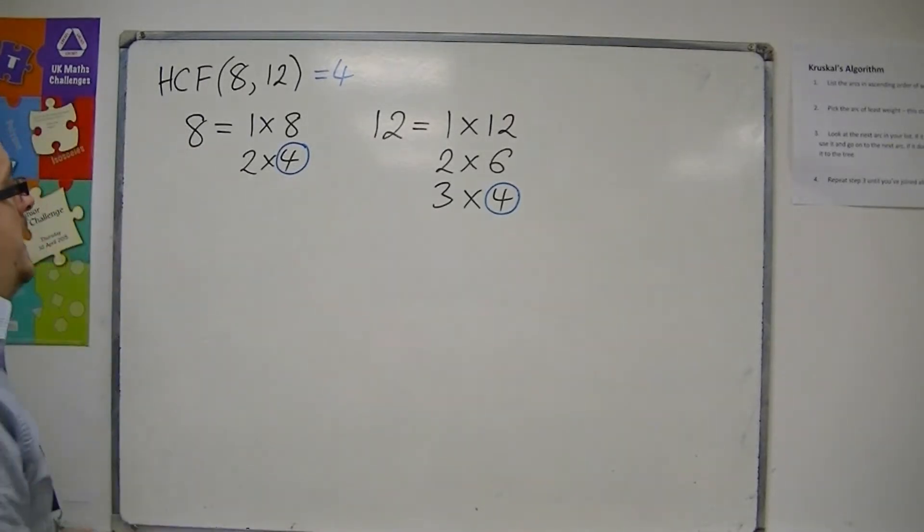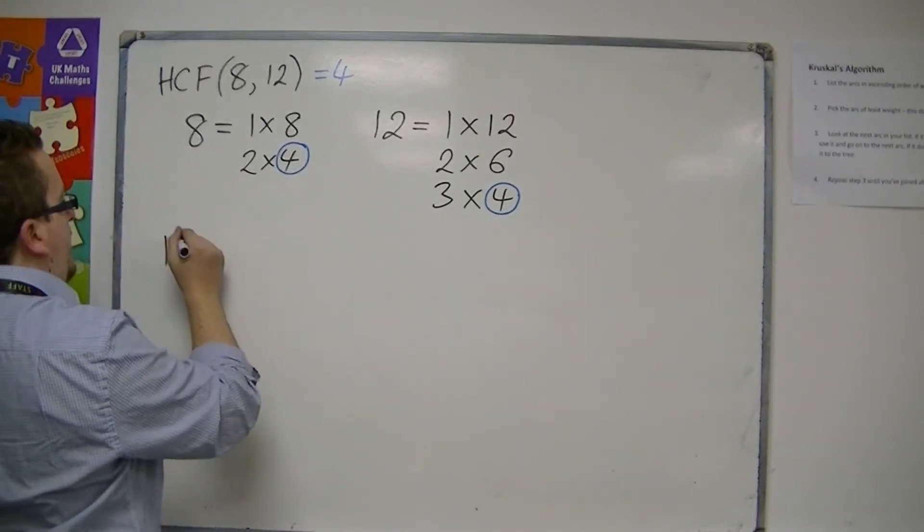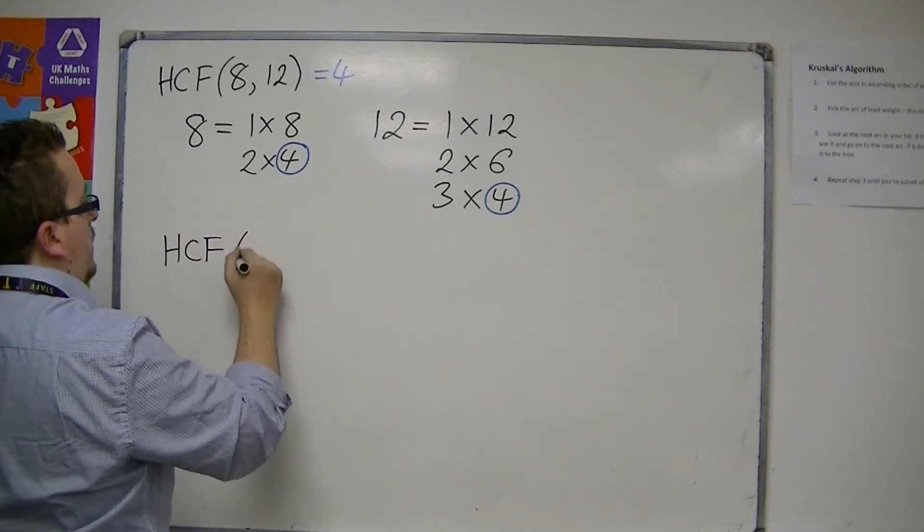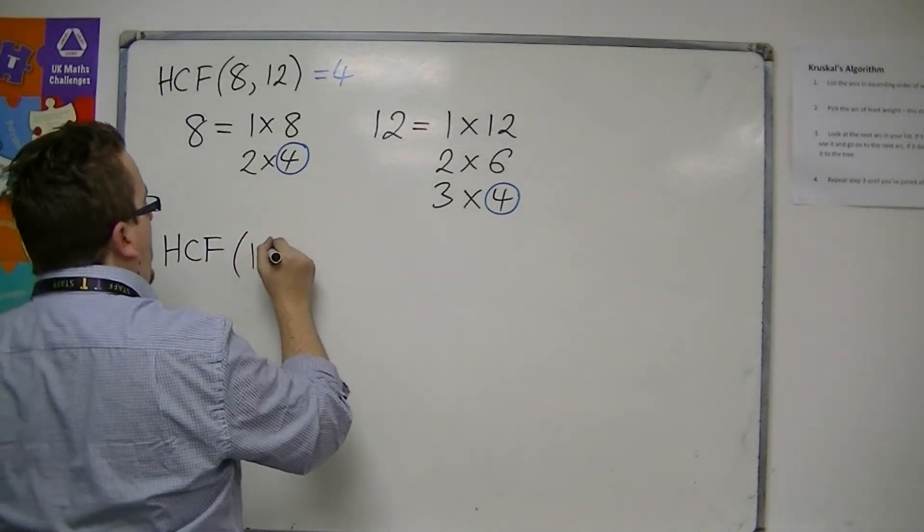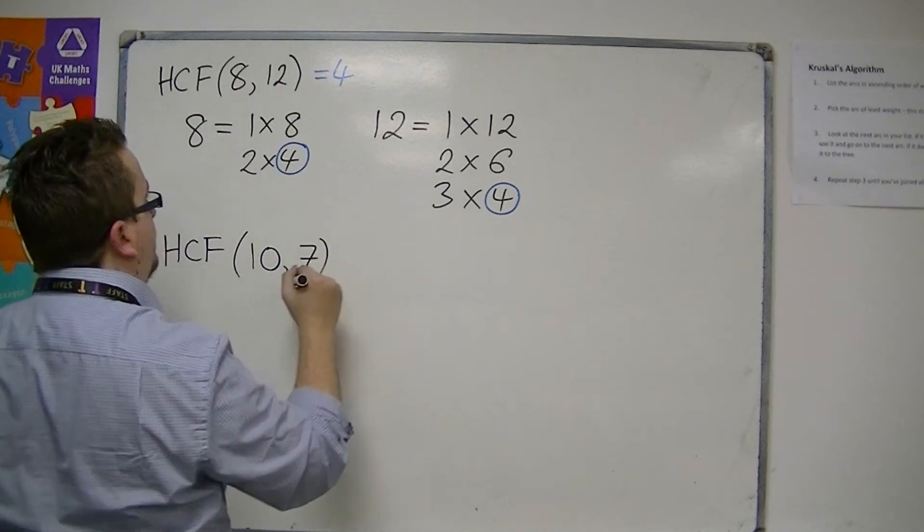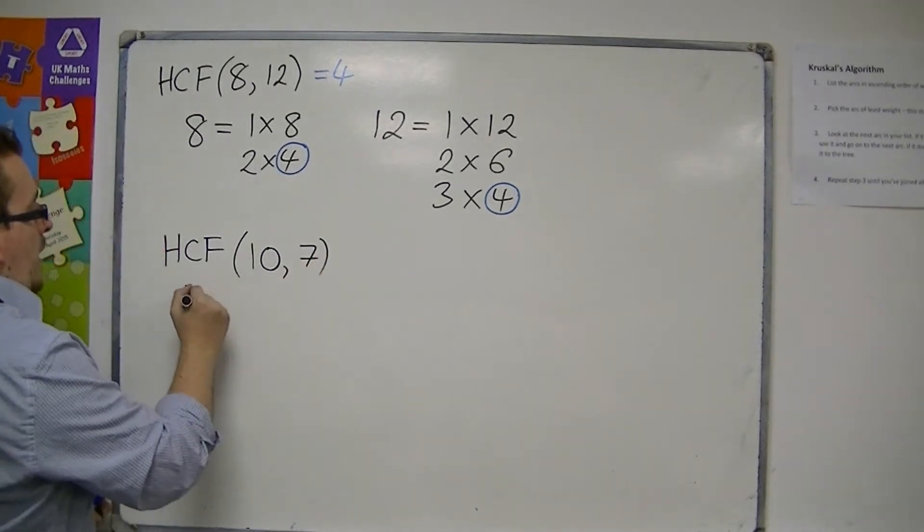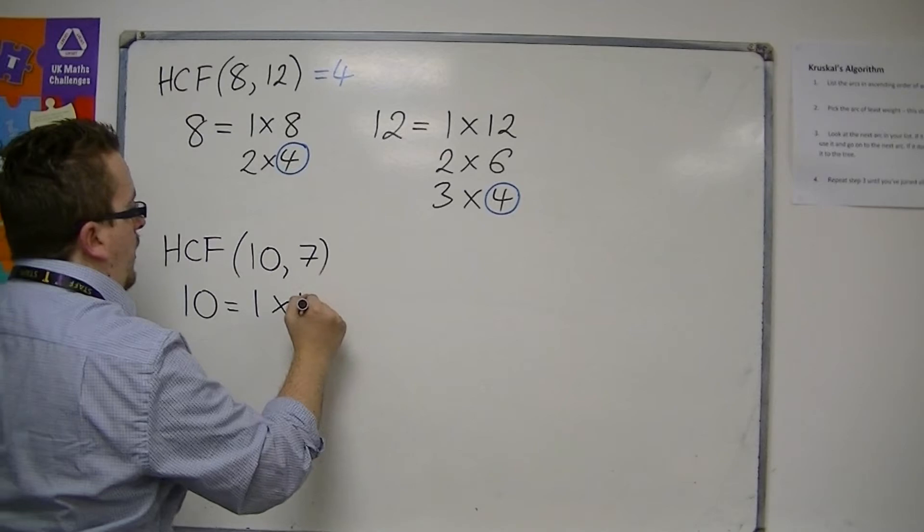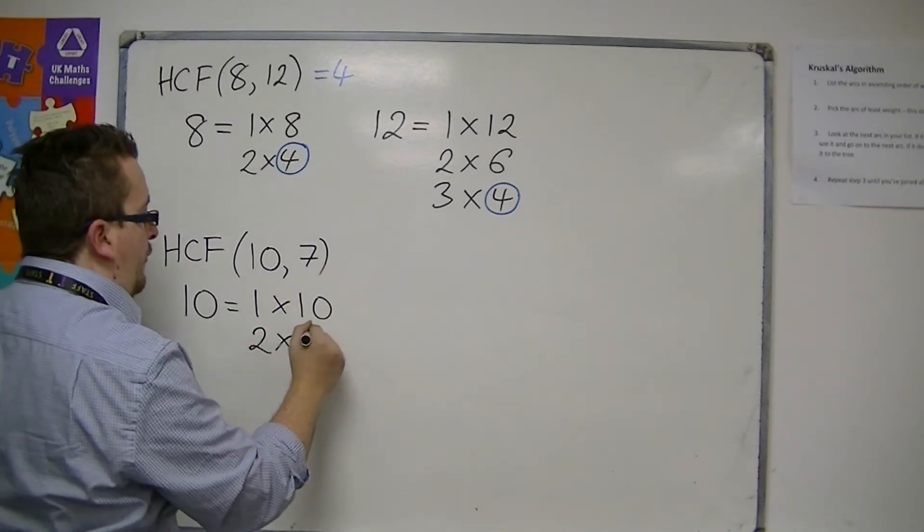Let's try something like the highest common factor of 10 and 7. The ways to get 10 are 1 times 10 and 2 times 5.